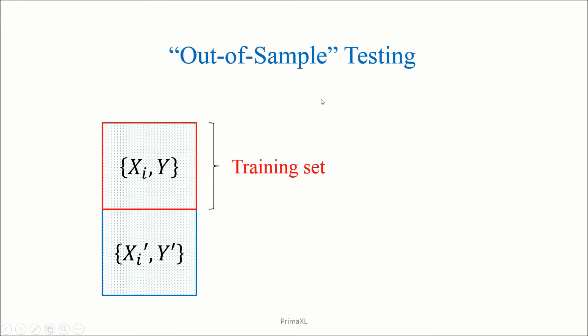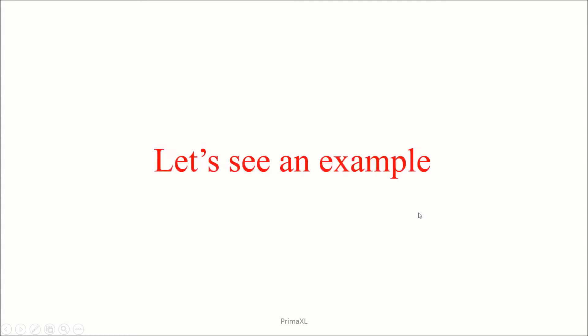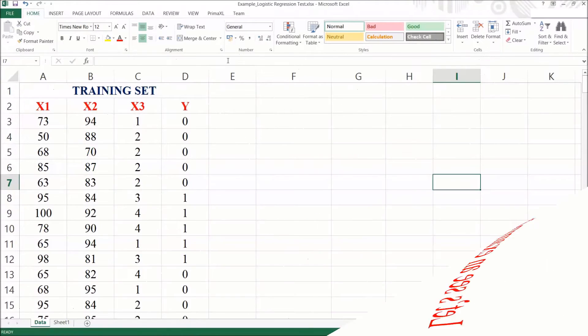By the way, there is also the so-called out-of-sample testing. In this case, we have a training data set and a testing data set which do not overlap with each other. The purpose of the out-of-sample testing is to generalize the regression model. Okay, now it's time to go through an example on the Excel spreadsheet.